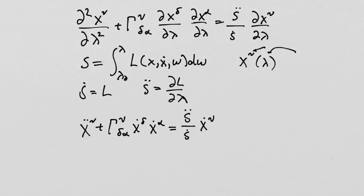It looks like this — all the dots represent derivatives with respect to lambda. That harkens back to your elementary Newtonian mechanics when you used a dot to represent the derivative with respect to time. In this case we're doing it with respect to the parameter of the curve, and as we'll see, that parameter is usually the proper time of that curve.